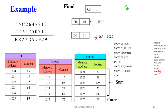If the carry flag value becomes 0, the DL register is not incremented — it remains 00 — and this 00 value is moved into the base pointer memory location. In this example, the carry value becomes 01. This is the example of multi-byte addition.